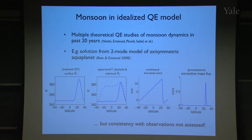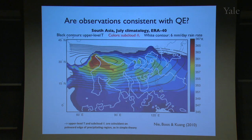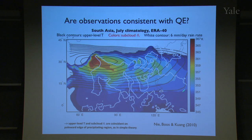This idea of convective quasi-equilibrium of large-scale tropical circulations has been used for a couple of decades in a number of different contexts. But the consistency with observations hasn't really been well examined. So I'm going to show you a couple of slides to answer the question: are observations consistent with this conceptual framework for monsoon circulations?